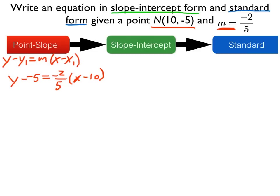Now we'll use the distributive property to get this point-slope form equation into slope-intercept form. So first thing, we have y minus negative 5, that's equivalent to y plus 5. And then we have negative 2 fifths times x, and negative 2 fifths times negative 10.